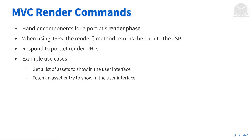The second type of MVC command is the MVC render command. This is a handler component for a portlet's render phase. When using JSPs, the render method returns the path to the JSP, and we want to respond to portlet render URLs. Some example use cases are to get a list of assets to show in the user interface, and to fetch an asset entry to show in the user interface.